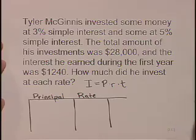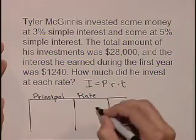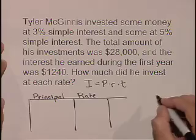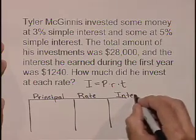The time in this problem is just going to be one year for both accounts, so it's going to be the principal times the rate times the time, which is one year, so we're not going to write it. The interest is going to be the principal times the rate.